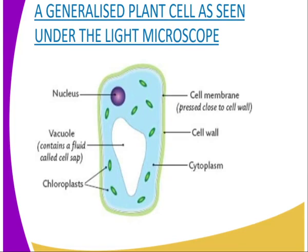The diagram you can see is a generalized plant cell as seen under the light microscope. When you observe it using the electron microscope, there are additional structures which you will be able to observe. But in our lesson, first we are going to deal with the light microscope. As you can see, there are different structures. These structures in biology are known as organelles — the organelles are the structures within a cell.